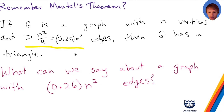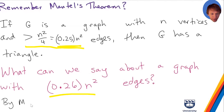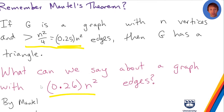The question we're going to address today is: what can we say about a graph that has, say, 0.26 times n squared edges? So by Mantle's theorem, if you have at least 0.26n squared edges, that's more than 0.25, so there's at least one triangle.